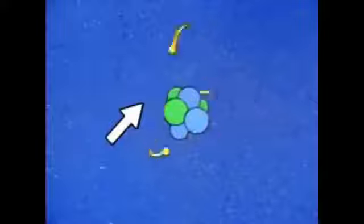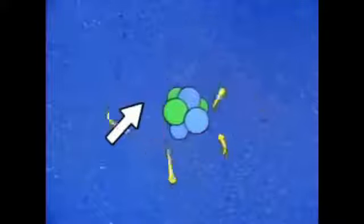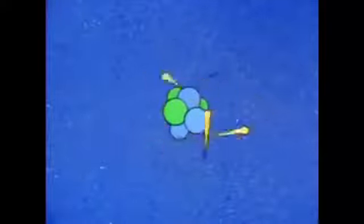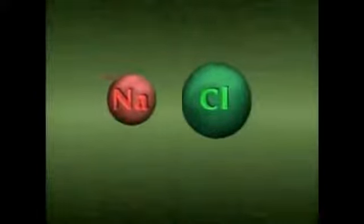All matter is made up of very small particles called atoms. Atoms are made up of even smaller particles. These particles include electrons that revolve around a nucleus. The electrons are negatively charged particles. The nucleus is made up of protons, which are positively charged, and neutrons. Neutrons do not have a charge. When atoms combine with other atoms, they form molecules.